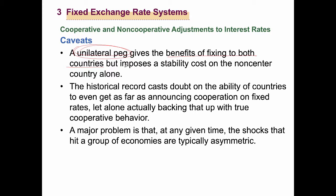But it imposes a stability cost. To maintain exchange rate stability, the non-center home country must follow the policy actions of the central country. Because the central country is mostly interested in improving its own economic situation, whenever it changes its equilibrium interest rate, it produces unwanted effects on the non-center home country — causing changes in national income and sometimes the price level. When national income changes, the unemployment rate changes, so these countries are vulnerable. This is a real cost for those countries.